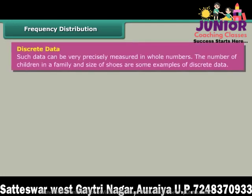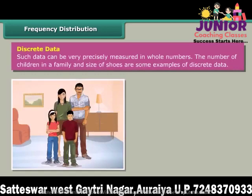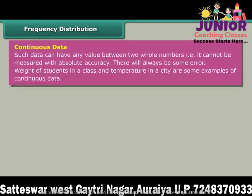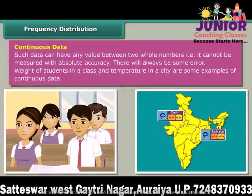Discrete data can be very precisely measured in whole numbers. The number of children in a family and size of shoes are some examples of discrete data. Continuous data can have any value between two whole numbers; that is, it can be measured with absolute accuracy, though there will always be some error. Weight of students in a class and temperature in a city are some examples of continuous data.